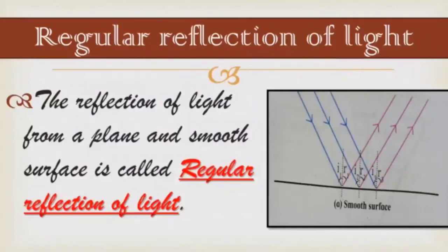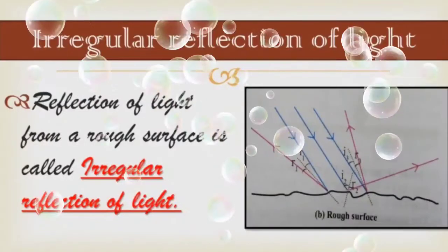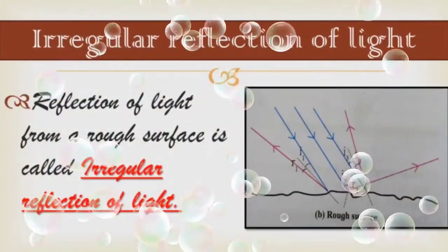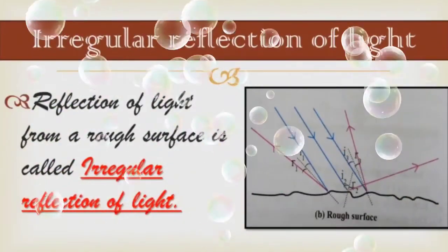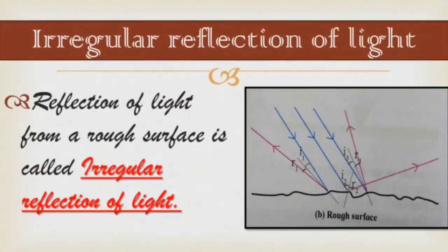Let us see irregular reflection of light. In irregular reflection, the angles of incidence for parallel rays of incident light are not equal, and therefore their angles of reflection are also not equal. Thus the reflected rays are not parallel to one another and spread over a large surface.